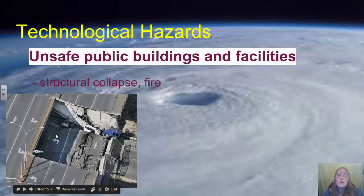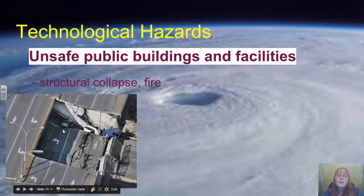More recent structural collapse examples include the garment factory that collapsed in Bangladesh, which had a connection to Canada because garments made there were linked to the Joe Fresh brand. There was also the collapse of a mall in Elliot Lake, where an engineer inspecting the building failed to notice that beams were corroding, causing the parking garage to fall through into the mall itself, killing two women. An inquiry into that technological disaster just finished this month.